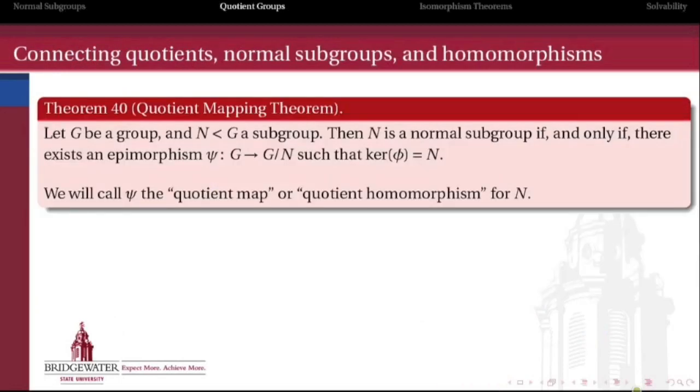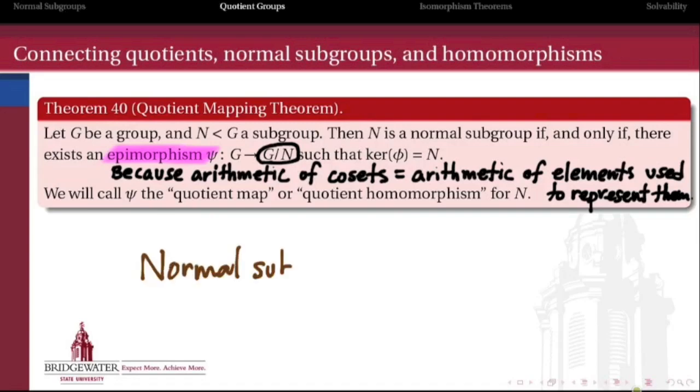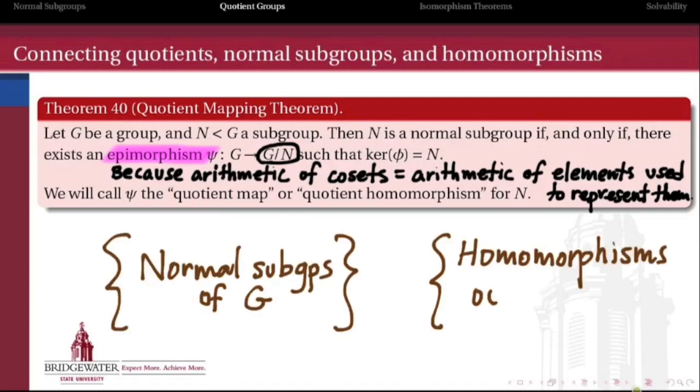So where we need to go with this next is to think about how quotients relate to normal subgroups and how they also relate to homomorphisms. One of the most important players here is something called the quotient mapping theorem, that just says that whenever we have a quotient group, there's also a homomorphism from G to that quotient group that's onto, so it's an epimorphism. And the reason that this exists is again because the arithmetic that we do with cosets is exactly the arithmetic of the elements that are used to represent those cosets. What this does is it establishes a one-to-one correspondence between normal subgroups of G and homomorphisms whose domain is G.